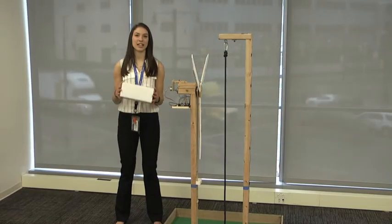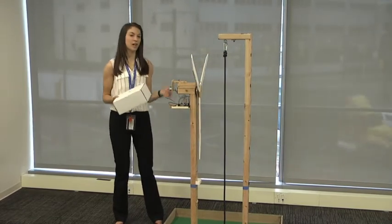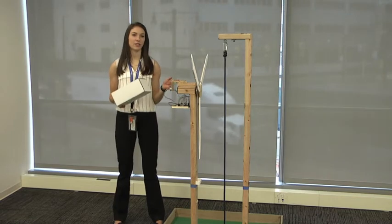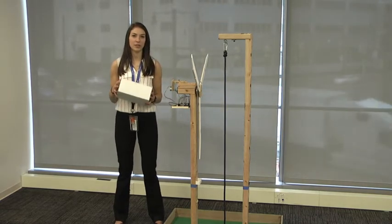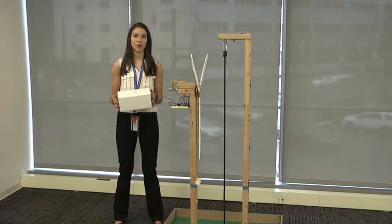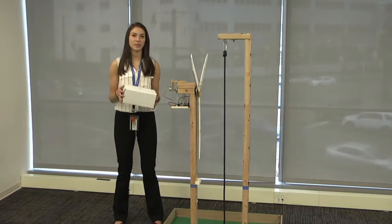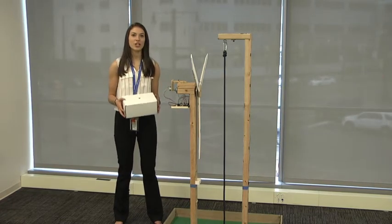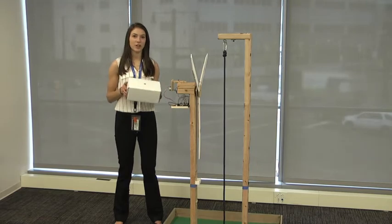This year we've created a device that can successfully climb up and down the rope and can successfully maintain and clean the wind blades. However, we don't want to show teams our device to keep the creativity in this challenge, so we're going to represent our device with this cardboard box.